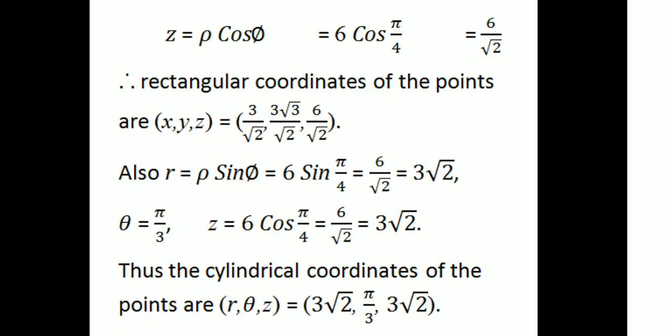For cylindrical coordinates: R equals rho sin phi equals 6 × sin(π/4) equals 6 × (1/√2) equals 6/√2 equals 3√2. theta equals π/3. z equals rho cos phi equals 6 × cos(π/4) equals 6 × (1/√2) equals 3√2. Thus the cylindrical coordinates of the point are R, theta, z equals (3√2, π/3, 3√2).